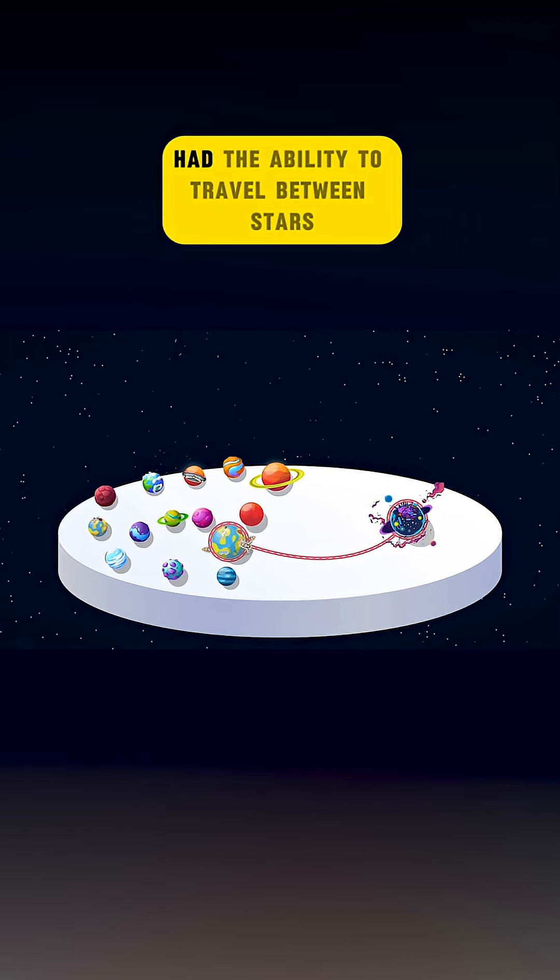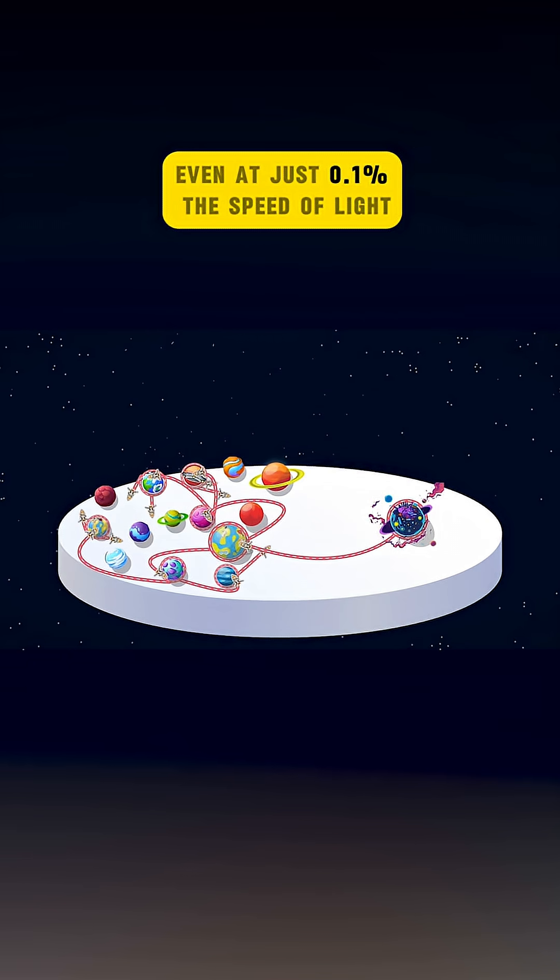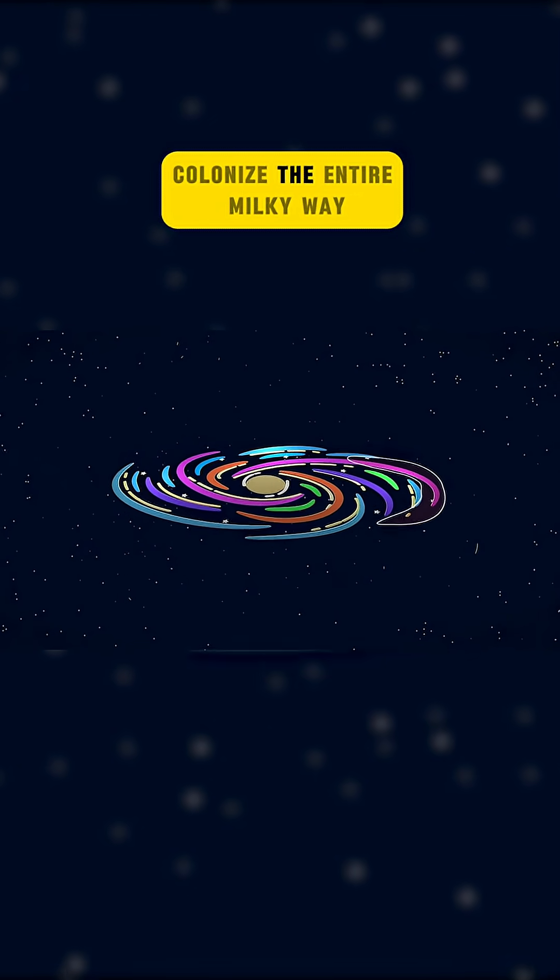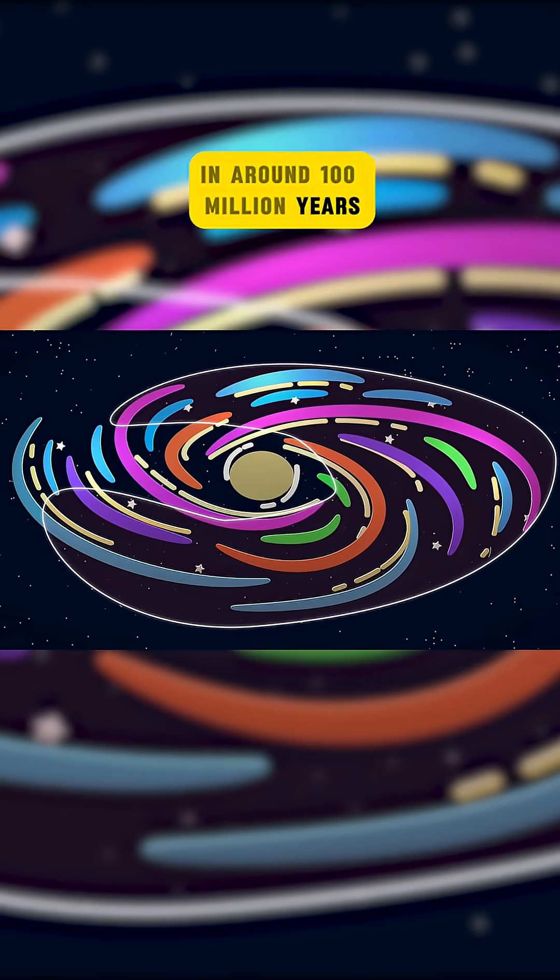If an advanced civilization had the ability to travel between stars, even at just 0.1% the speed of light, it could theoretically colonize the entire Milky Way in around 100 million years.